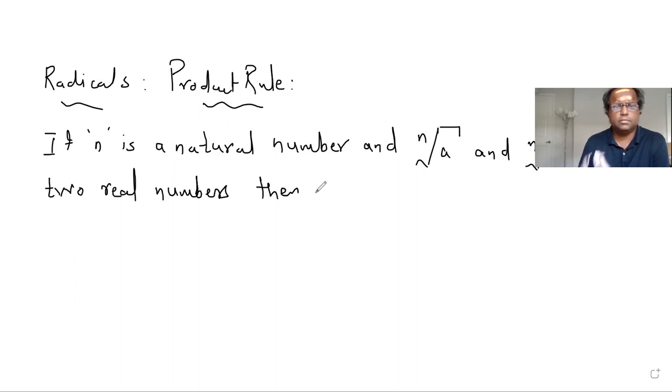then what will happen is n root of a times n root of b is equal to n root of ab. That's it. That's the rule. The beauty of this rule is that it works in the vice versa.